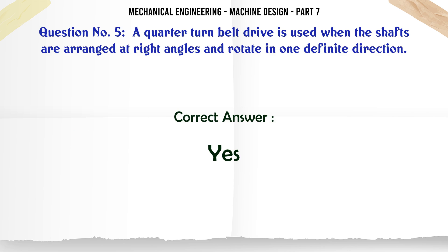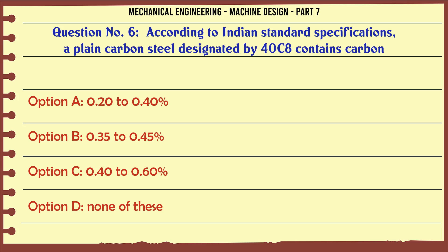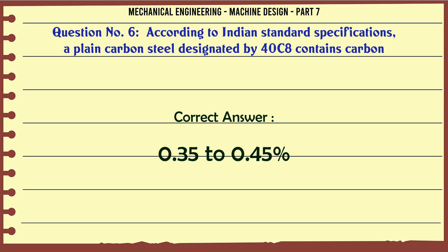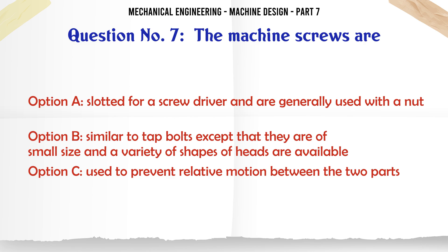According to Indian Standard specifications, a plain carbon steel designated by 40C8 contains carbon: a) 0.20 to 0.40, b) 0.35 to 0.45, c) 0.40 to 0.60, d) none of these. The correct answer is 0.35 to 0.45.